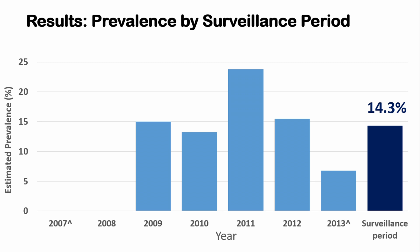The results of the prevalence are illustrated in the graph. I'd just like to highlight that 2007 and 2013 represent incomplete years, so it's not a full year of reporting. Over the period of surveillance, there is a mean of 14.3% prevalence of sarcocystis — not dissimilar to what's been published elsewhere. For example, the last survey published in Spain was around 12%.